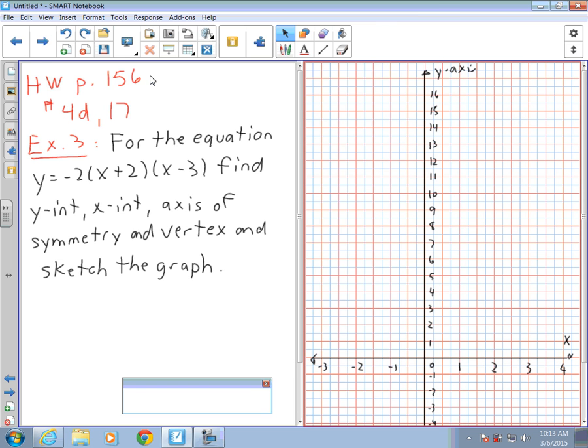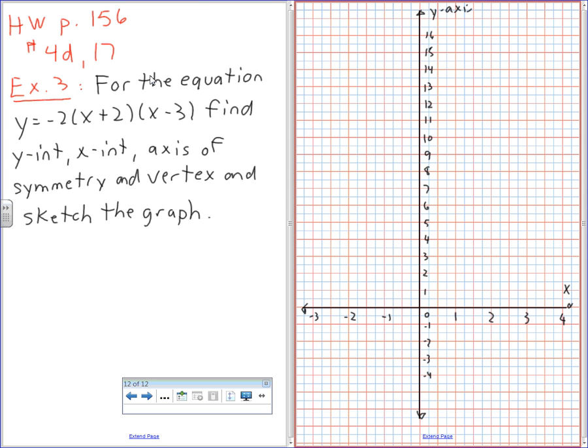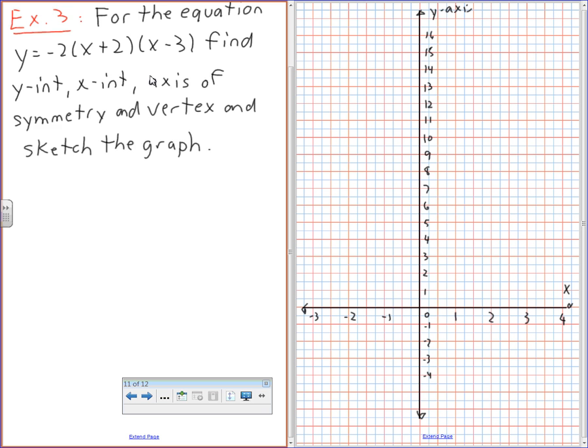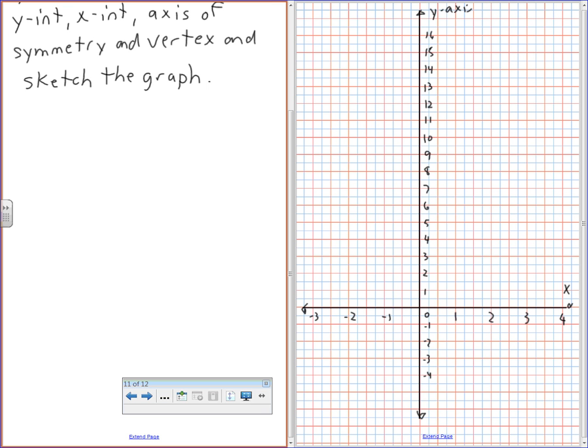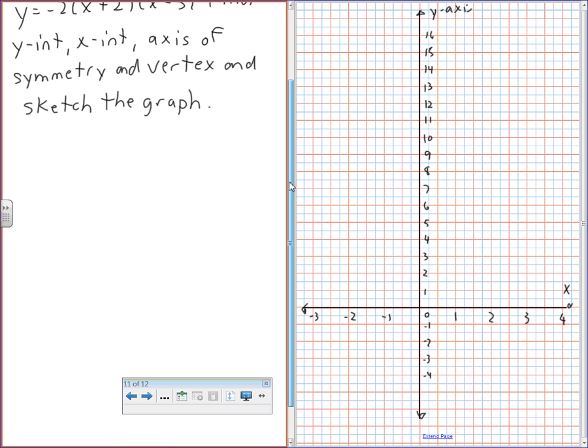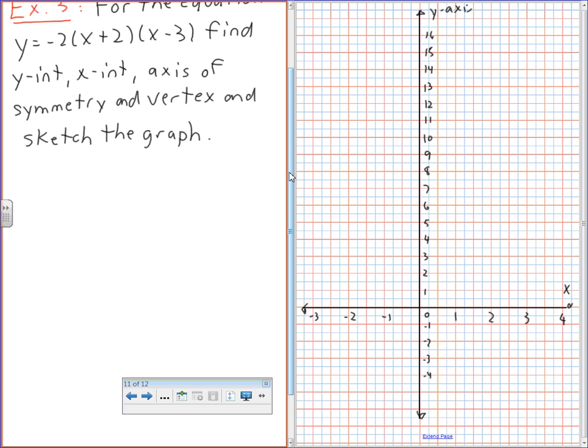I'm going to start with my y-intercept. To get my y-intercept, I'm going to set x equals 0. So y is equal to negative 2, 0 plus 2, 0 minus 3, which is negative 2 times 2 times negative 3, so y equals 12.